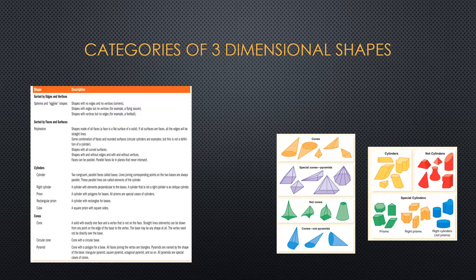For three-dimensional shapes, there are a few that we cover at the elementary level — basically pyramids, cones, and prisms. On both this slide and the previous one, you can take some time to look at the descriptions and help yourself better understand those particular shapes.